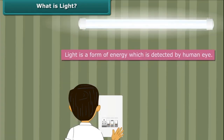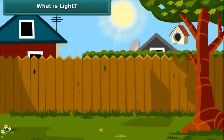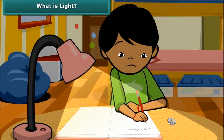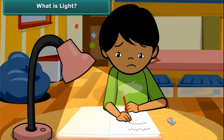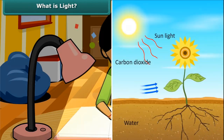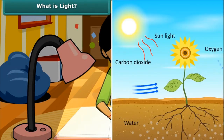Light is a form of energy which is detected by the human eye. It is everywhere around us. It not only helps us to see things, but it is also needed by plants to produce food for us.